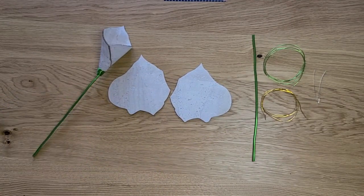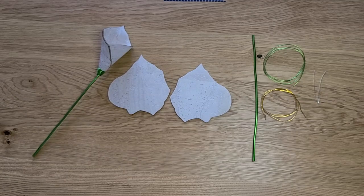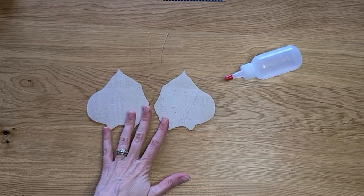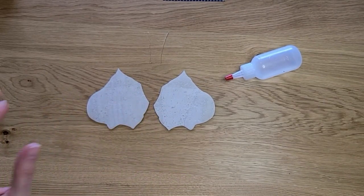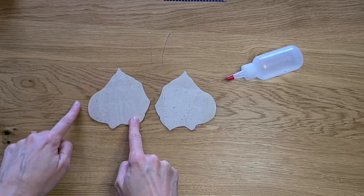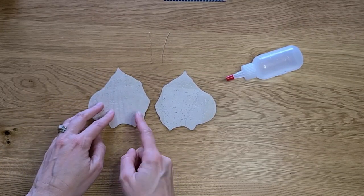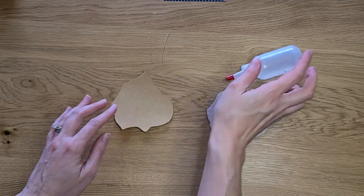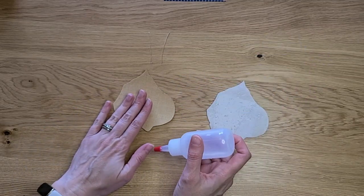All right, let's get started. Our first step for making the calla lily is to glue our petals together. So I want you to take the outer petal, the one that has the curve to the left hand side, flip that over, and we're going to put the glue on this piece.